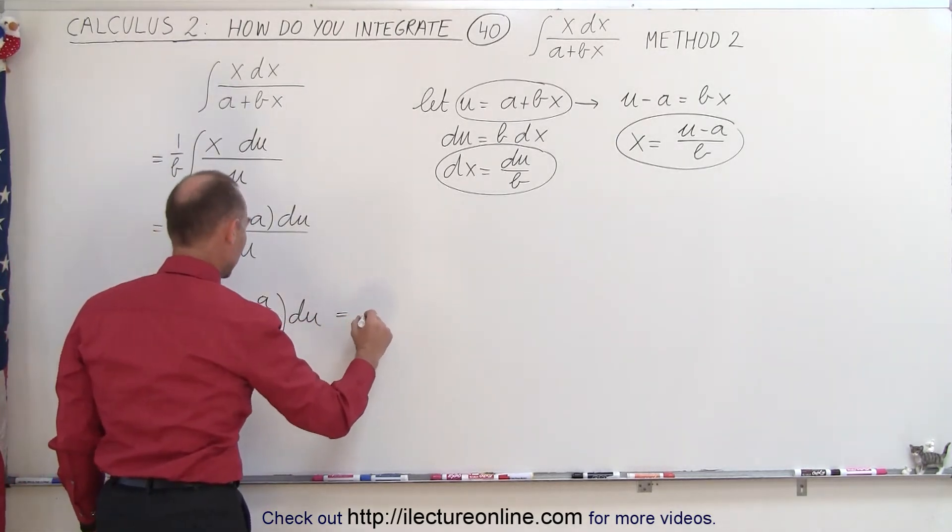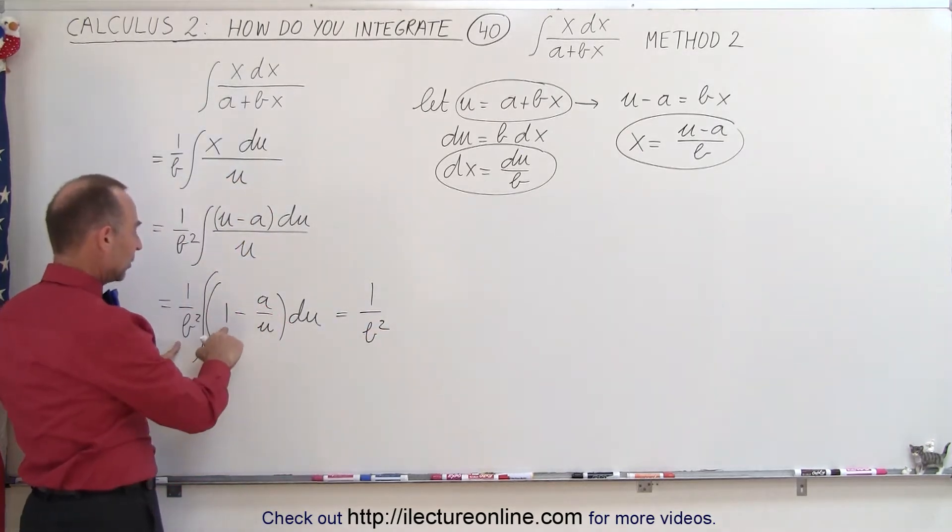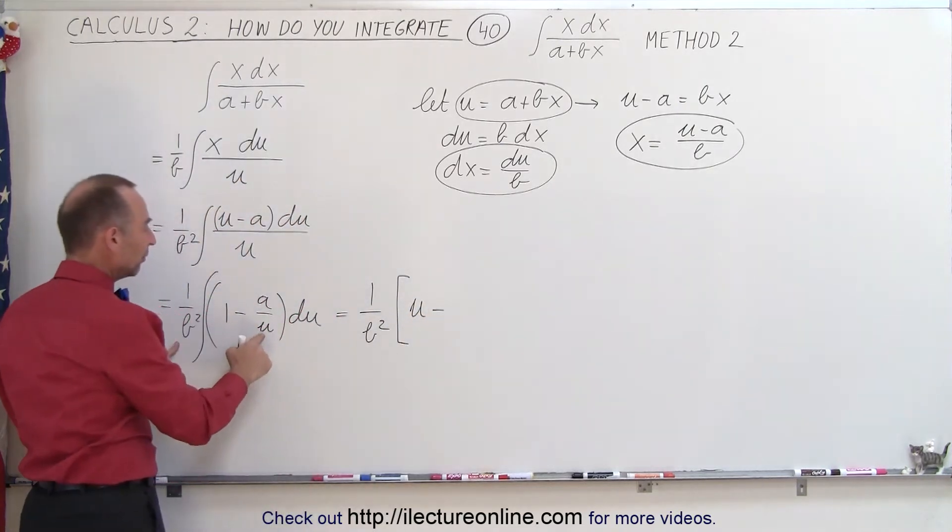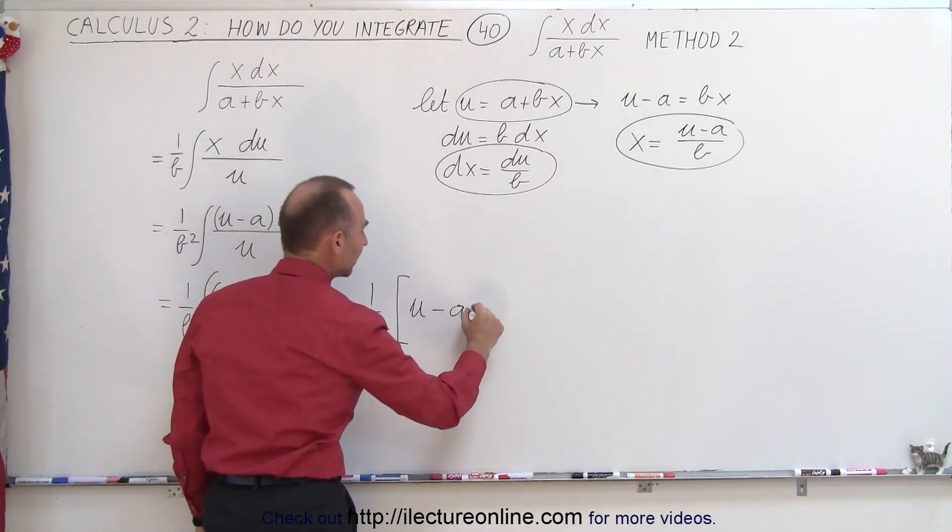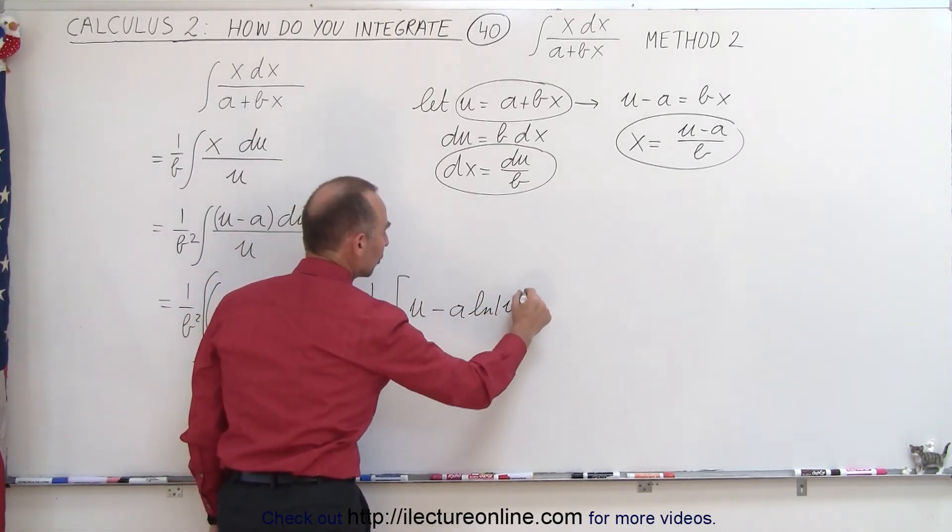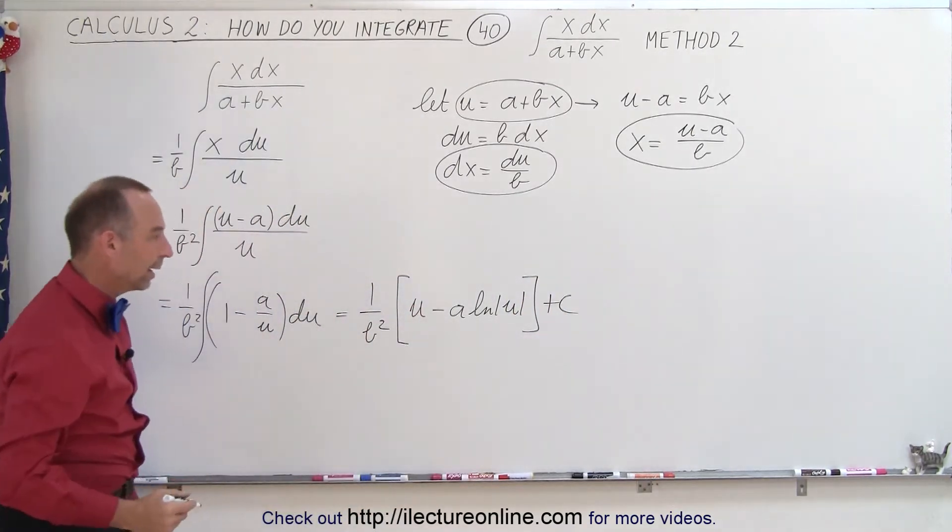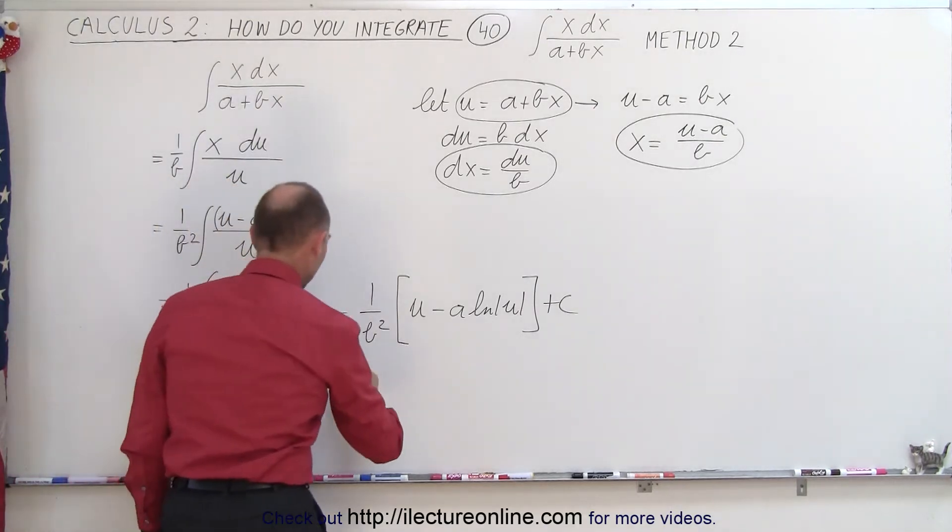This is equal to 1 over b squared and the integral of 1 du is simply u minus an integral of a over u, well a over u, that would be the natural log of u. And we still have an a, so that's minus a times the natural log of u. And now we'll add the constant of integration. And now all we have to do is plug back in what u is equal to. And we get the following.